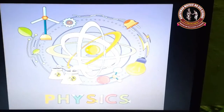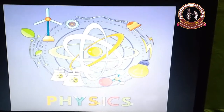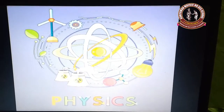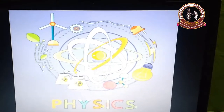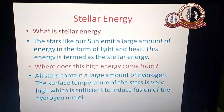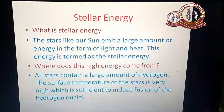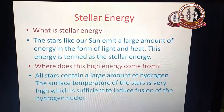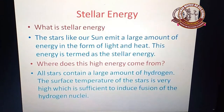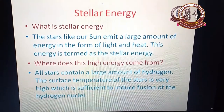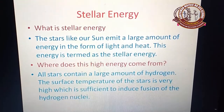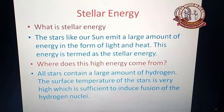Welcome to physics online class. Today we are seeing about nuclear physics part 5. Last classes we were seeing about atom bombs and nuclear fusion reactions. Now we are going to see about stellar energy. Stellar is nothing but solar or Sun — the energy produced by stars is called stellar energy. The definition: stars like our Sun emit a large amount of energy in the form of light and heat. This energy is termed stellar energy.